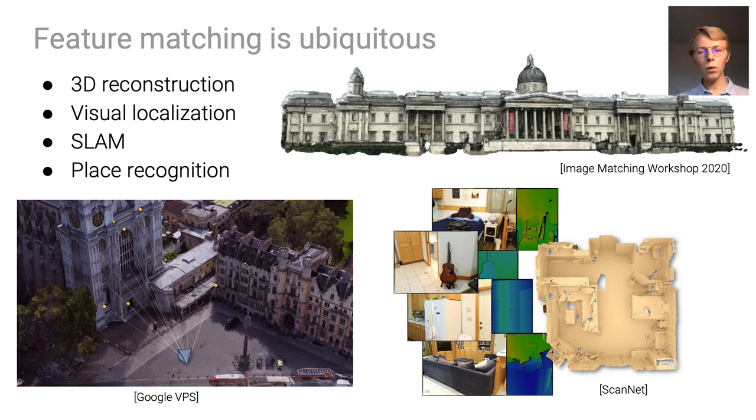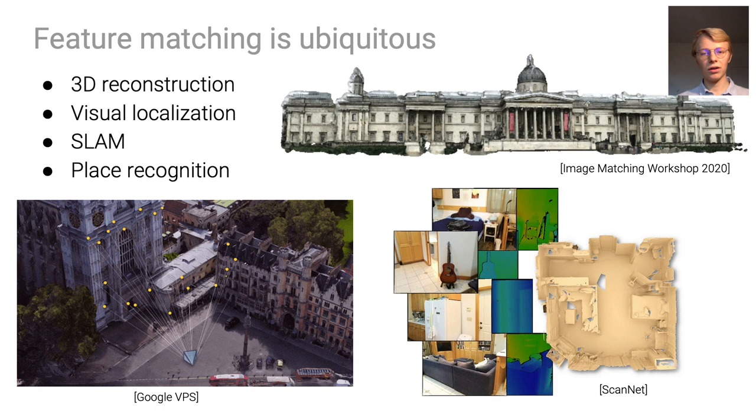Matching local features is a critical step in numerous 3D geometry tasks such as 3D reconstruction, visual localization, SLAM, and place recognition. By improving the matching performance, we can positively impact all of these tasks.